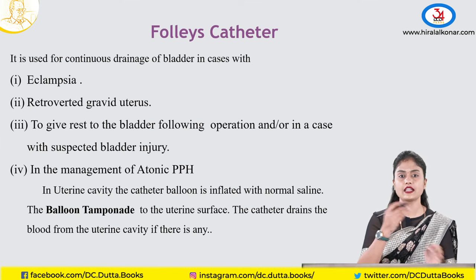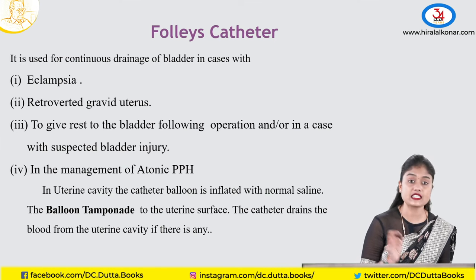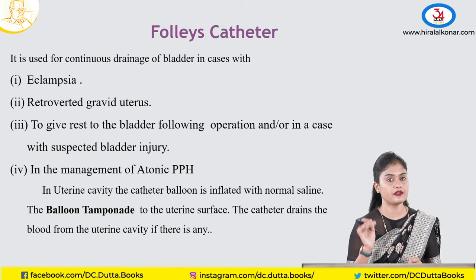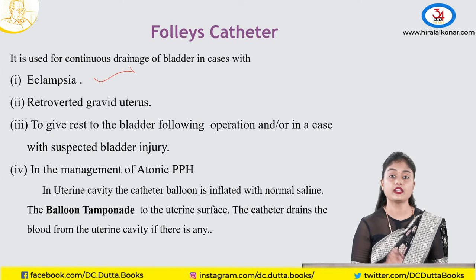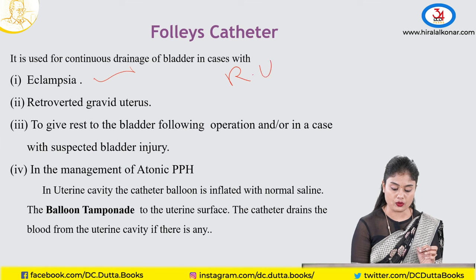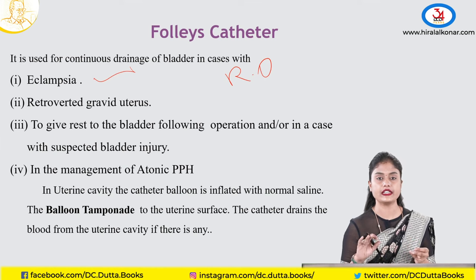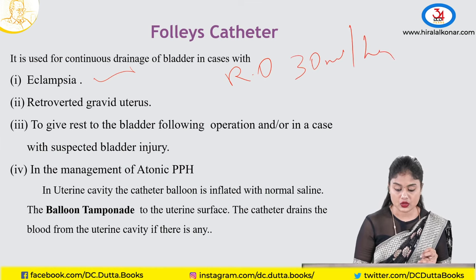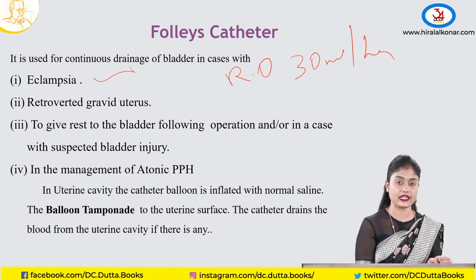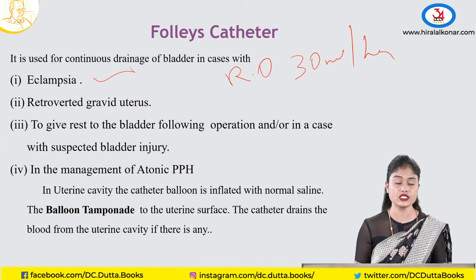Uses of Foley's catheter are similar to the rubber catheter. In eclampsia, we catheterize the bladder to also monitor magnesium sulfate toxicity by knowing the renal output — output should be at least 30 ml per hour. So the patient is catheterized while on magnesium sulfate regimens. It is also used after surgery or operative delivery, and in retroverted gravid uterus causing urethral compression — the catheter is retained until the uterus becomes an abdominal organ.